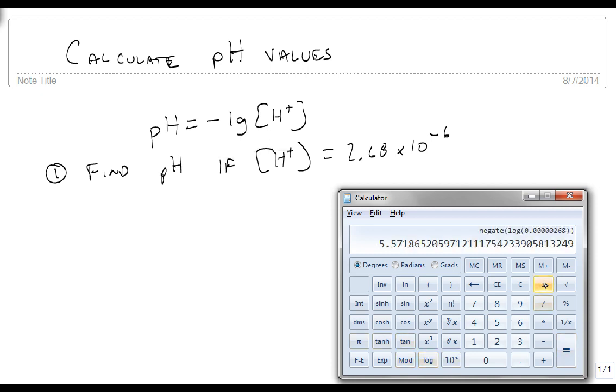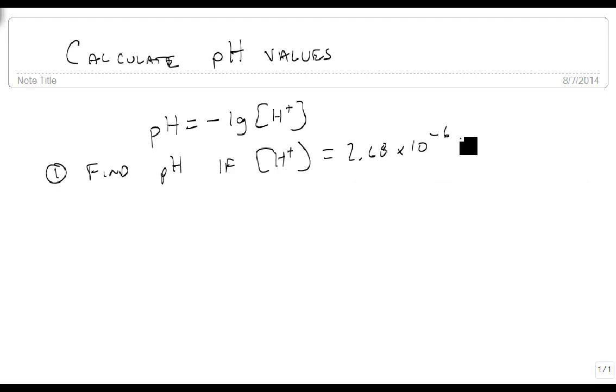And we're going to change its sign. So this substance, whatever it is, that has 2.68 times 10 to the minus 6 hydrogen plus ions concentrated in it, has a pH of approximately 5.6.